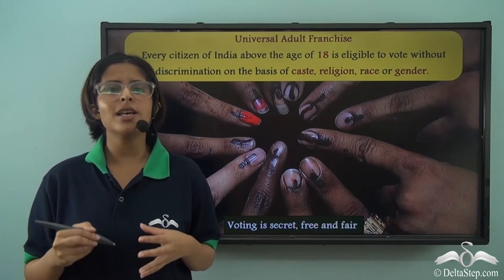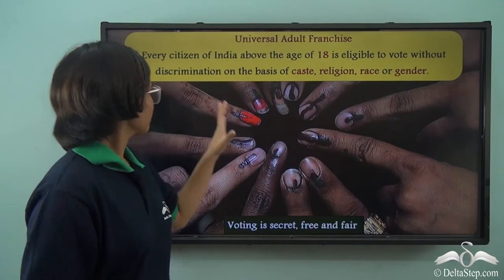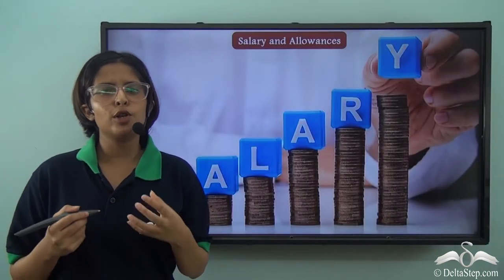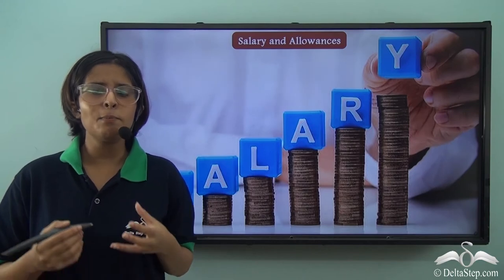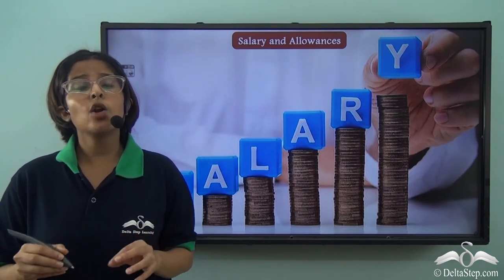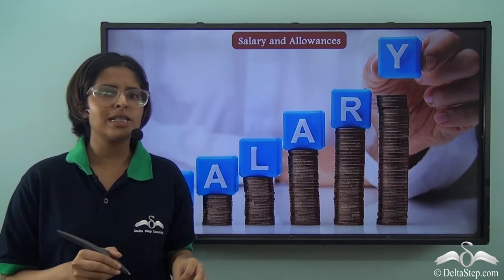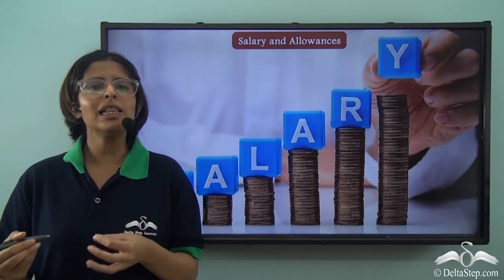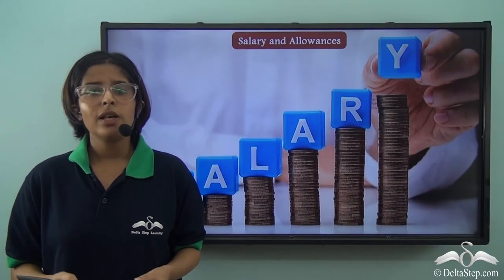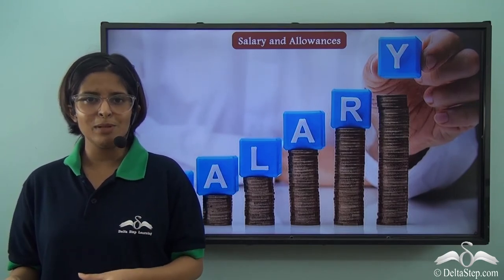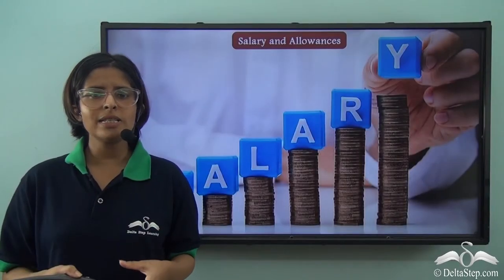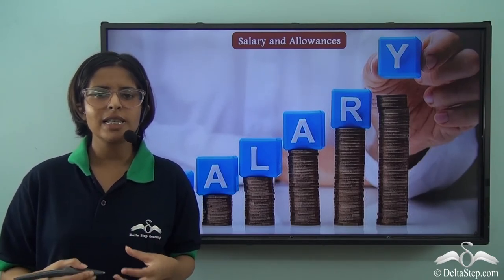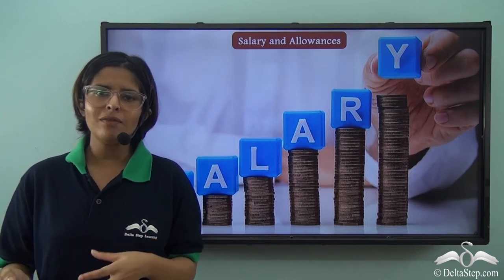The latest Lok Sabha elections took place in May 2019. Being a member of the Lok Sabha is a full-time government job, so members are given salaries decided by the parliament itself. They are also given allowances and benefits for serving the people, along with pensions after retirement for financial stability. Their medical expenses, travel expenses and accommodation expenses are also taken care of by the government.